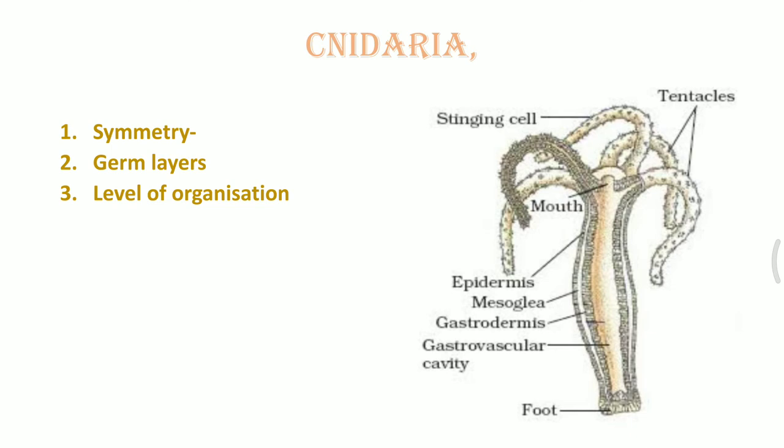The level of organization seen in cnidarians is tissue level of organization, because of the presence of tentacles. There will be aggregation of cells to form stinging cells which are helpful for catching prey. In cnidarians, we do not see the presence of a head, and for body movement there are only tentacles, which either serve the function of stinging or helping the locomotion of jellyfishes.